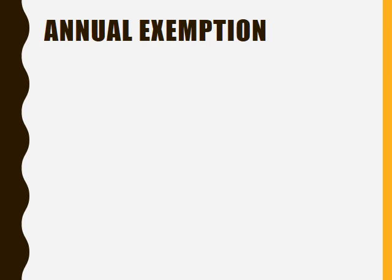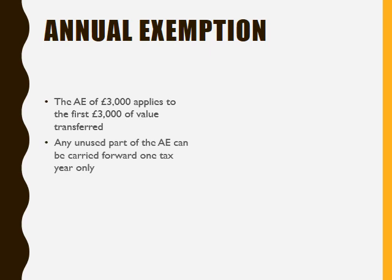I want to make one or two further points regarding the annual exemption of £3,000. When an individual gifts some assets that don't fall into the other exempt types of gifts, that £3,000 will apply to those gifts. If you have any unused part of the annual exemption, it can be carried forward, but just to the next tax year — it can't be carried forward any further.